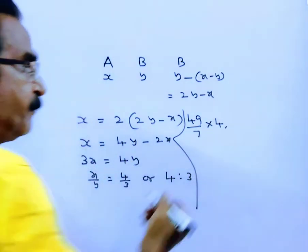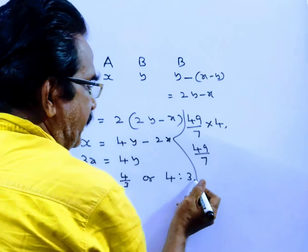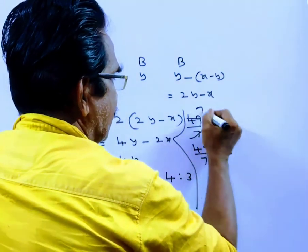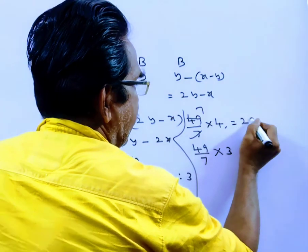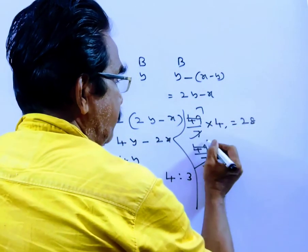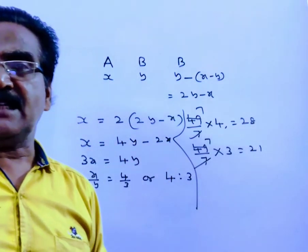We get the age of A. 49 by 7 into 3, we get the age of B. 7 fours, 7 sevens. A is 28 years. B is 21 years friends.